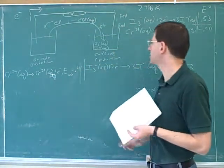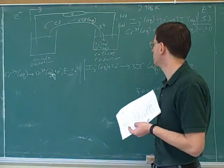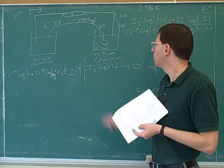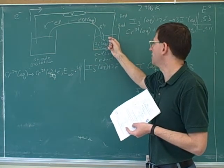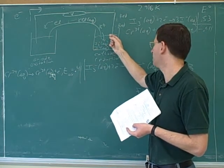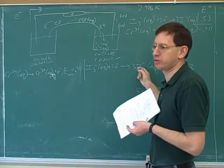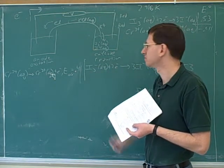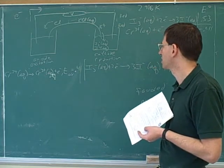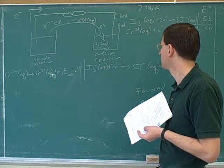So we have the I3 minus ions dissolved in the solution, and this must also be dissolved because it was written with AQ. Both of these ions are in the solution. One of these I3 negatives will drift towards the wire, pick up an electron coming through the wire, then drift away as I minus instead of I3 minus.